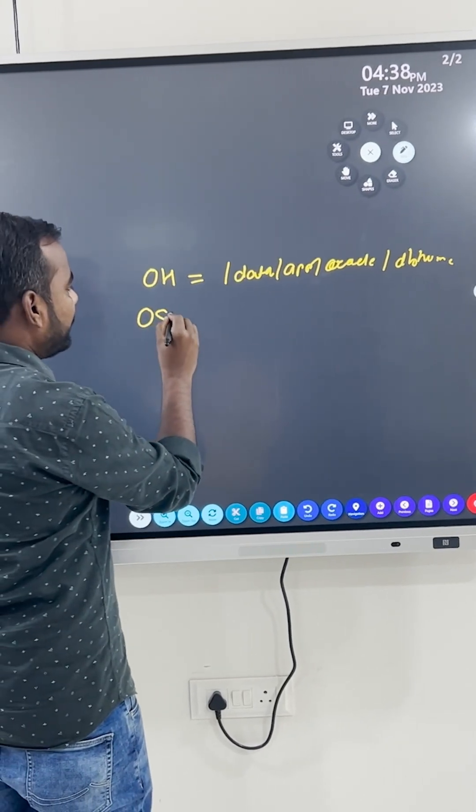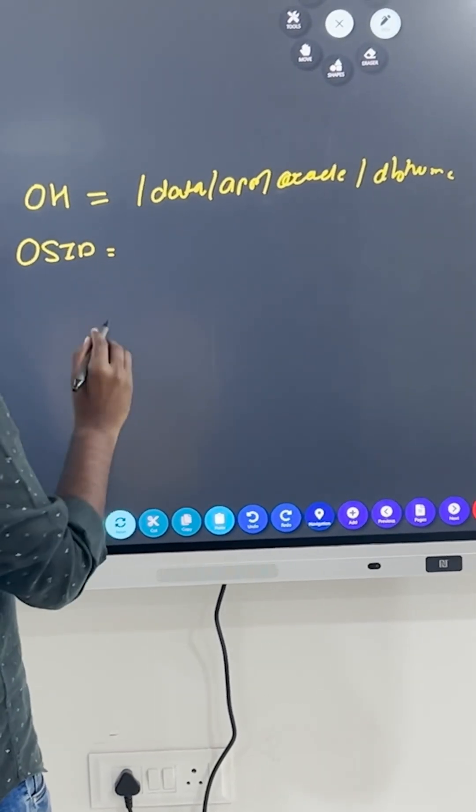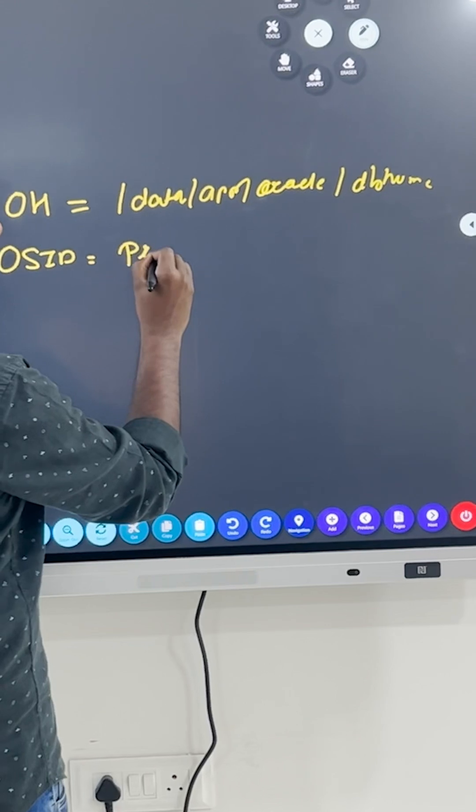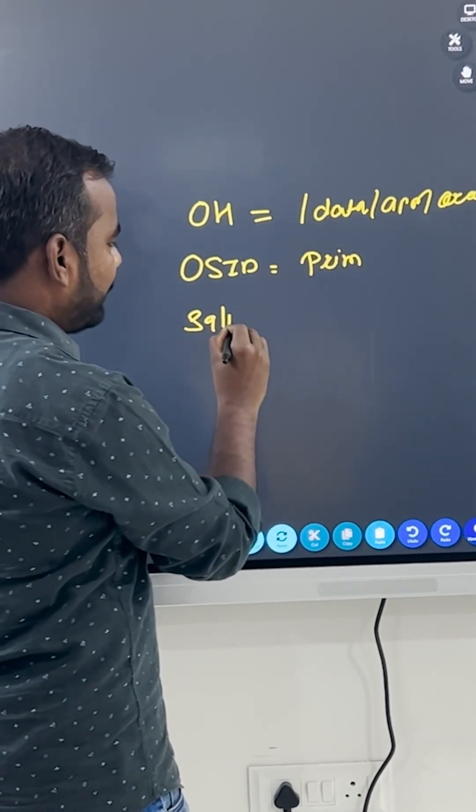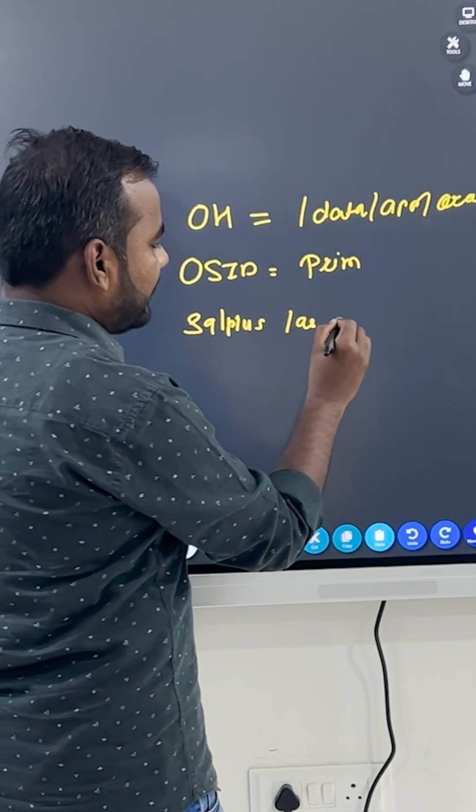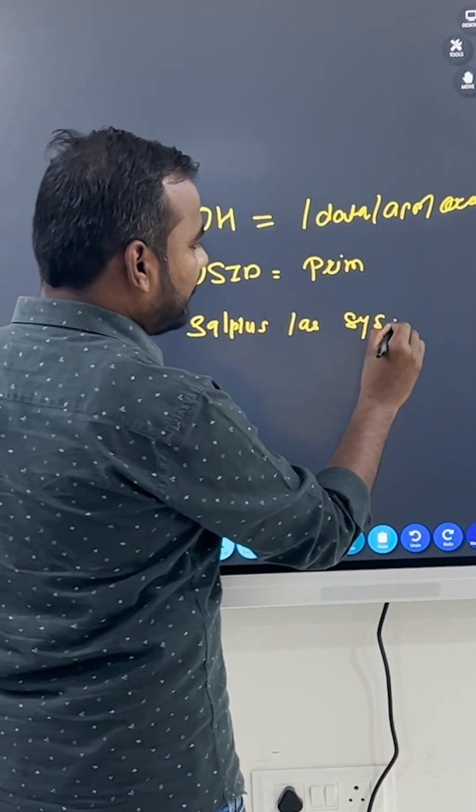Second thing you need to set: the Oracle SID, which is your database name. Let's say my database name is PRIM. And finally, you can just connect to the SQL Plus utility, like SQL Plus slash as SYSDBA.